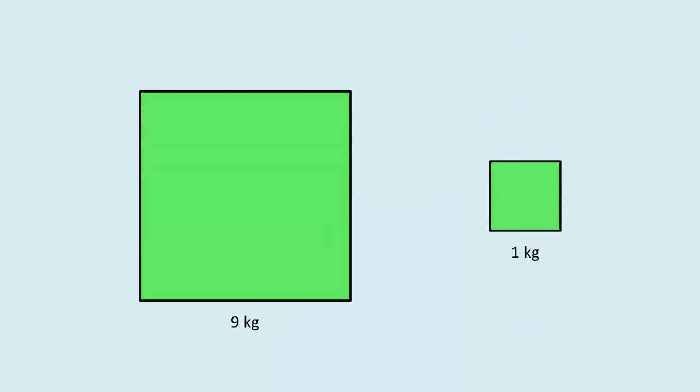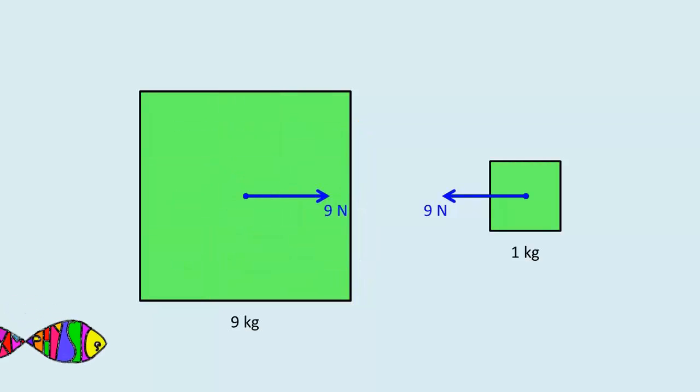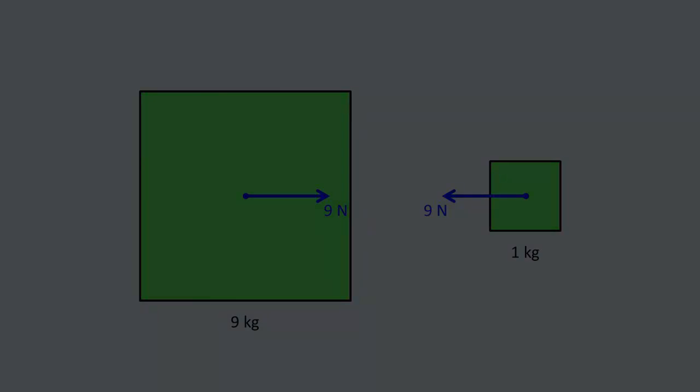Now consider a 9 kg and a 1 kg. Think of the 9 kg as nine separate 1 kg masses. Based on each pair of 1 kg exerting a 1 N force on each other, we end up with 9 N on the 1 kg and 9 N on the 9 kg.